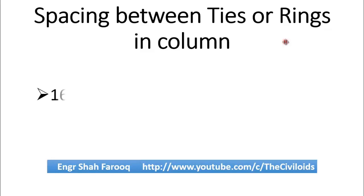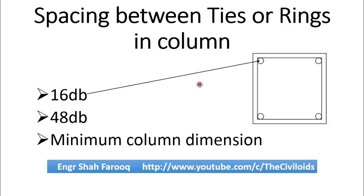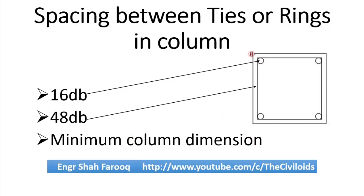The first equation is 16db, the second equation is 48db, and the third is the minimum column dimension. In the first equation, db means the diameter of the longitudinal bar. In the second equation, db means the diameter of the transverse reinforcement or ties bar. Minimum column dimension means the smallest dimension of the column, which can be its width or its breadth.